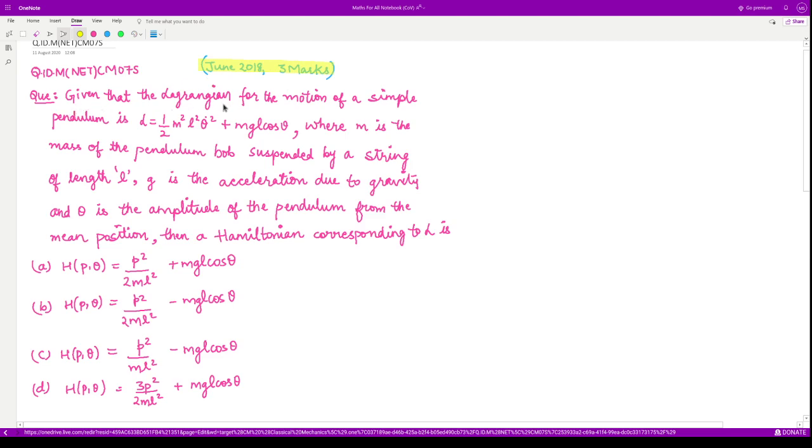This question says, given that the Lagrangian for the motion of a simple pendulum, this is given to be this equation. The Lagrangian is given to us, where m is the mass of pendulum bob suspended by a string of length l, g is the acceleration due to gravity, and theta is the amplitude of the pendulum from the mean position.